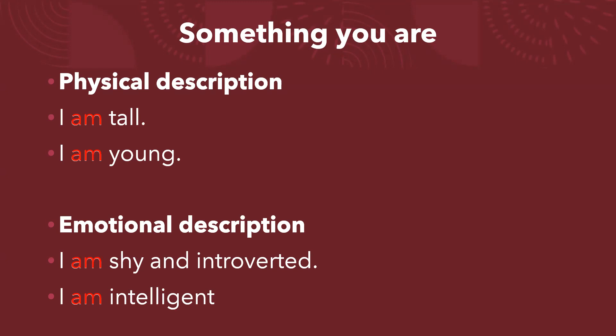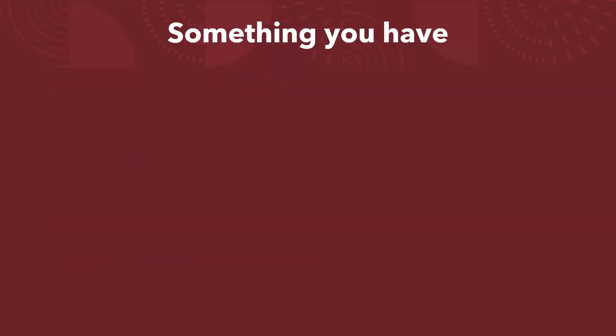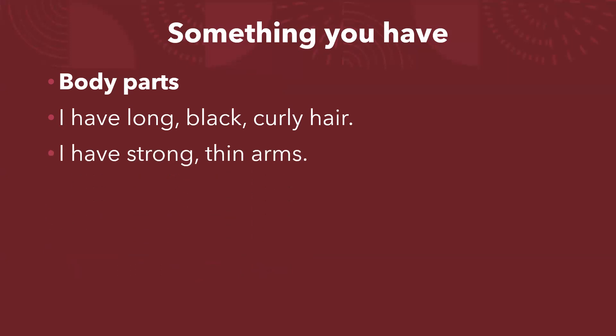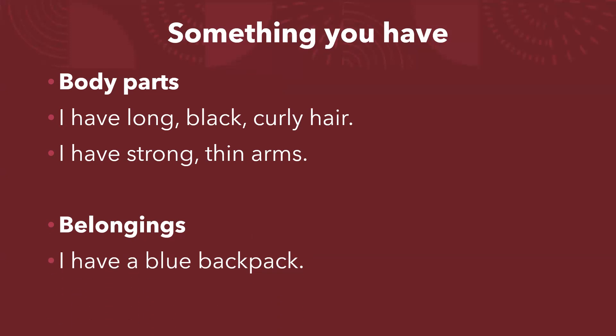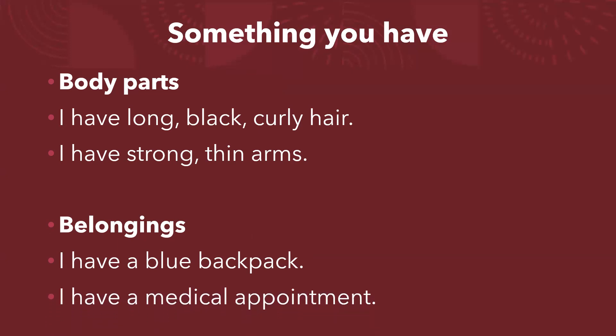Sin embargo, en esta lección empezaremos a hablar de partes del cuerpo humano, y para hablar de partes del cuerpo, no podremos decir yo soy — tendremos que utilizar otro verbo que será tener. Ejemplo: yo tengo cabello largo, negro y rizado. No se podría decir yo soy cabello largo — no. Yo tengo brazos fuertes y delgados.